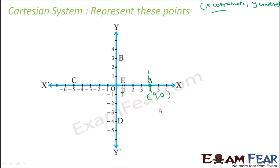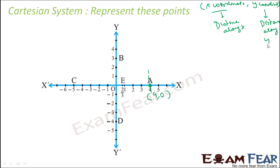Let me repeat: for the x-coordinate, the distance along the x-axis from the y-axis is 4. For the y-coordinate, the distance along the y-axis from the x-axis is 0. So point A is 4 comma 0.